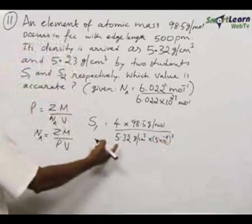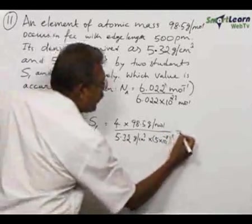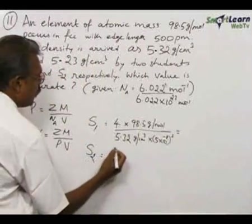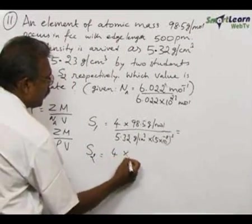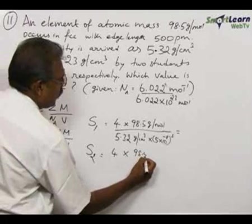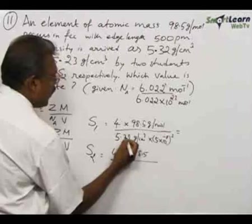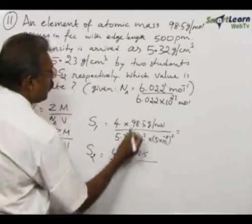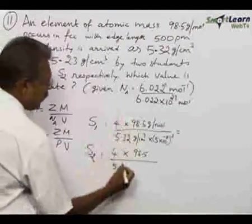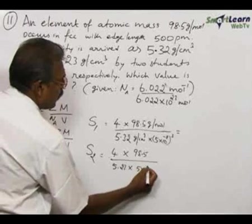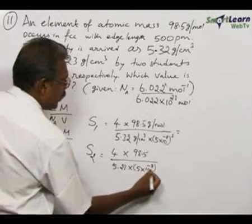If you go by this we have one density, one Avogadro constant value. For student 2, same thing: 4 particles, 98.5 gram per mole, divided by instead of 5.32 you have to take 5.23 because the second student calculated 5.23, times 5 × 10⁻⁸ the whole cube.